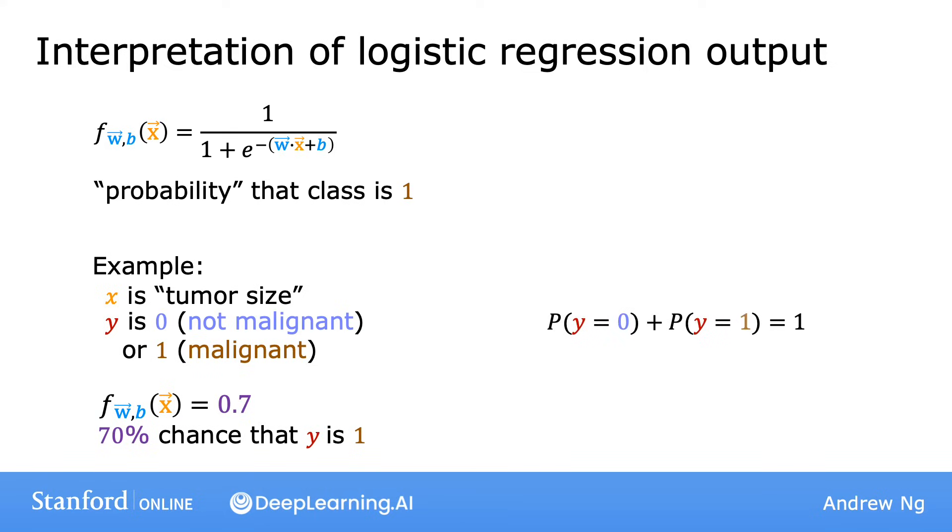So, y has got to be either 0 or 1, and thus the probability of it being 0 or 1. These two numbers have to add up to 1, or to 100% chance. So, that's why if the chance of y being 1 is 0.7, or 70% chance, then the chance of it being 0 has got to be 0.3 or 30% chance.